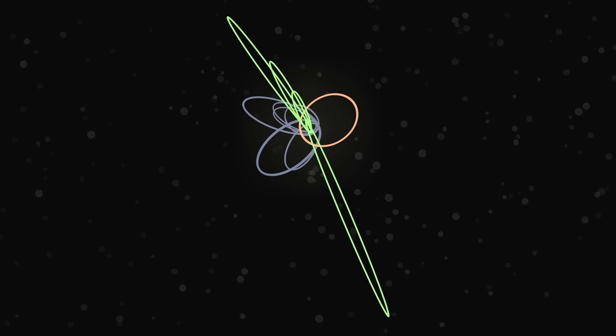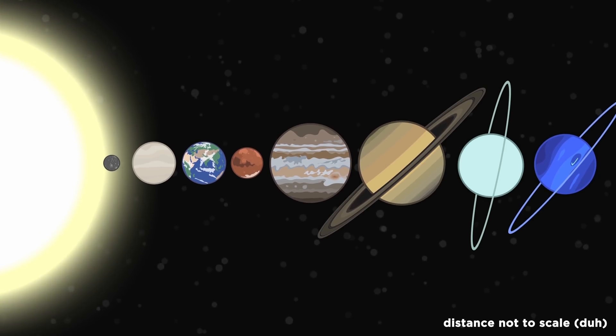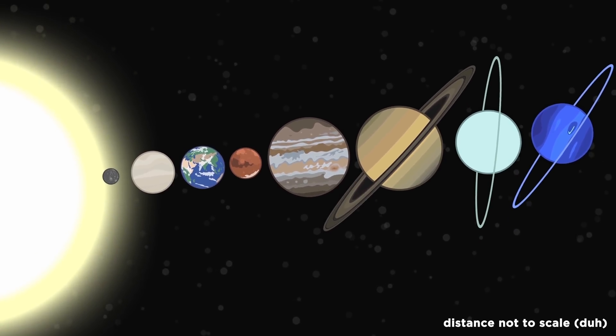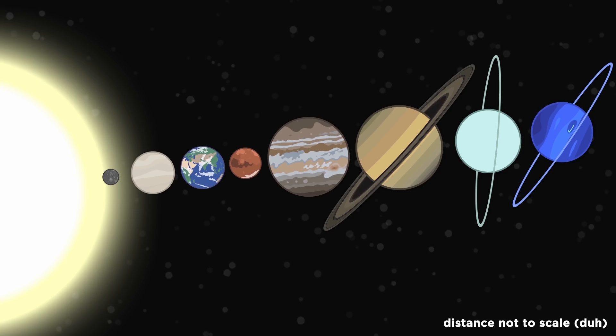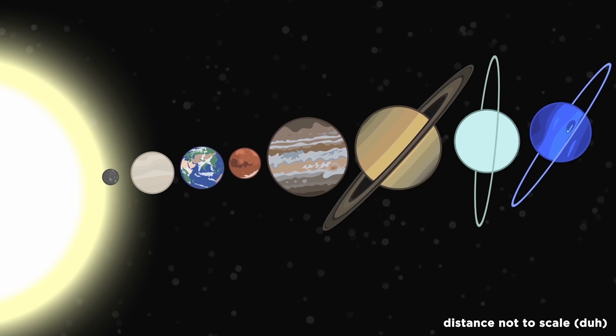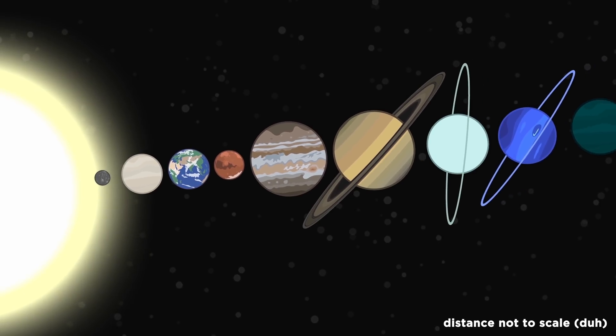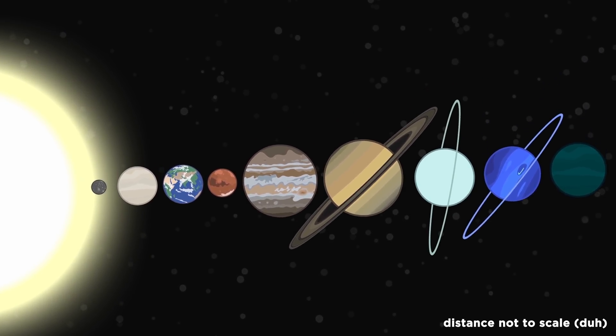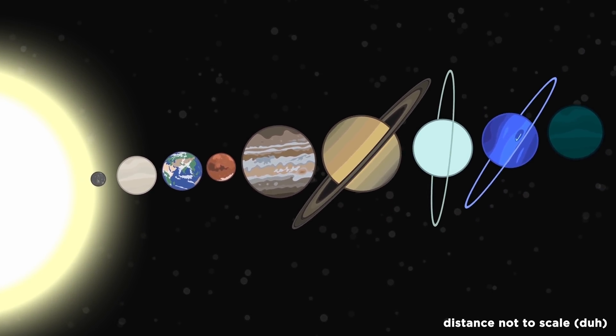Additionally, the eight known major planets of the solar system currently orbit the sun tilted by six degrees compared to the sun's equator. The reason behind this has long been one of astronomy's greatest mysteries. But planet 9's gravity, over billions of years, could have influenced this by wobbling the entire solar system plane ever so slightly.